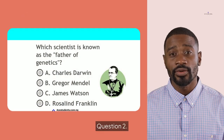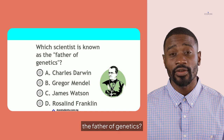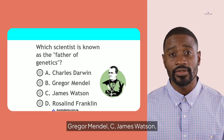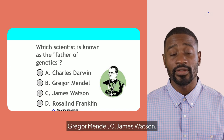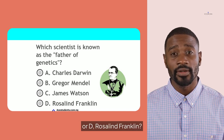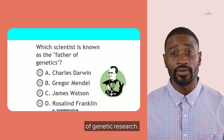Question 2. Which scientist is known as the father of genetics? Is it A. Charles Darwin, B. Gregor Mendel, C. James Watson, or D. Rosalind Franklin? Consider the pioneers of genetic research.